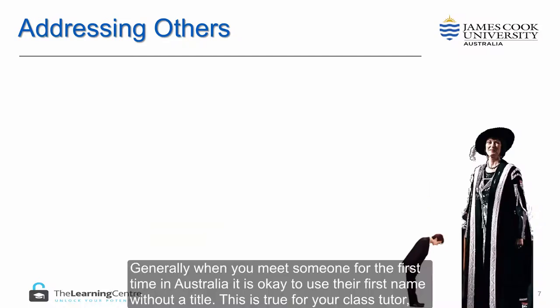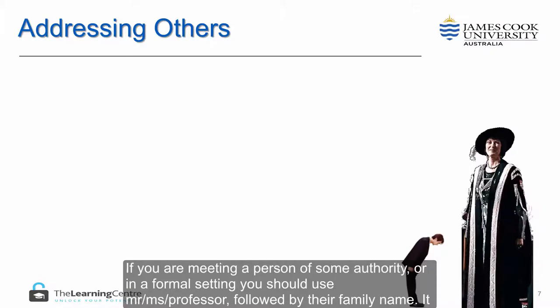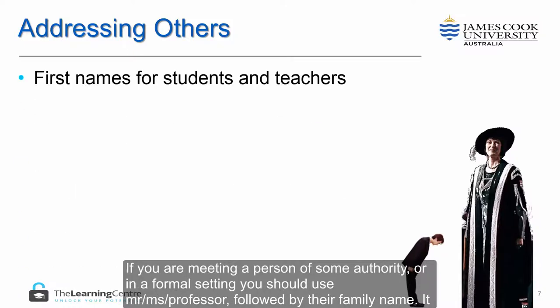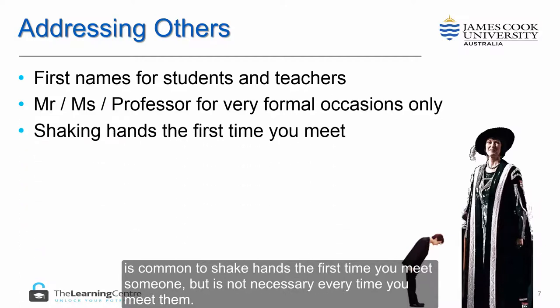Generally, when you meet someone for the first time in Australia, it is okay to use their first name without a title. This is true for your class tutor, lecturer, or classmate. If you are meeting a person of some authority or in a formal setting, you should use Mr., Miss, or Professor, followed by their family name. It is common to shake hands the first time you meet someone, but it is not necessary every time you meet them.